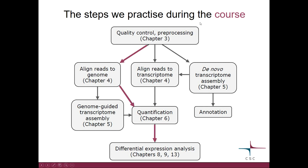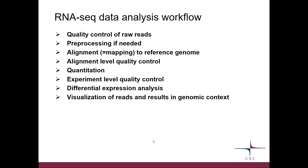During this course we are doing the steps indicated in red or purple here. Essentially, this is the workflow we are going to follow: we check the quality of the reads, pre-process them if we notice a problem, then map them to the reference genome, check the quality again, count the reads per gene, then do another type of quality control, and then we do differential expression analysis and visualize our reads and results in the genomic context.